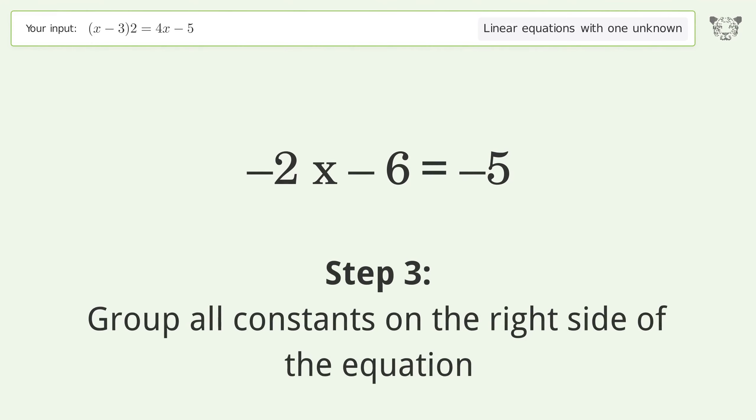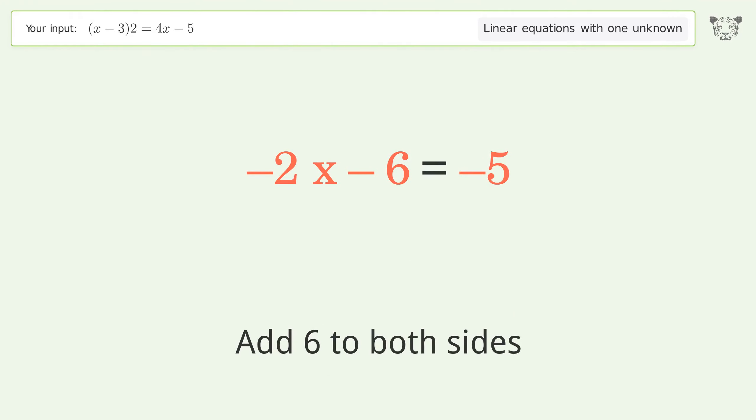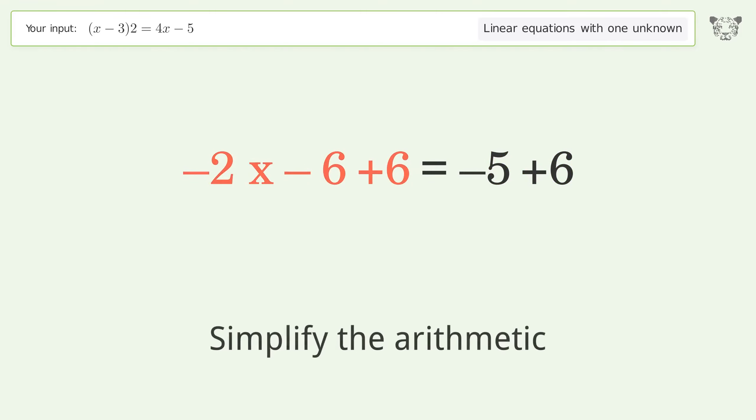Group all constants on the right side of the equation. Add 6 to both sides. Simplify the arithmetic.